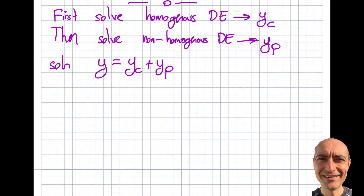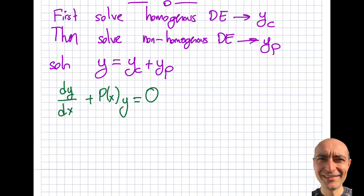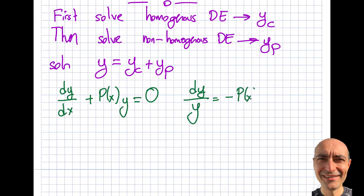If I rewrite the homogeneous equation, it looks like: dy/dx plus P(x)y equals zero. Now I'd like you to pause the video because you should be able to solve this. This is a separable equation from the previous segment. I have dy/dx, P(x), and y, so let me combine them. dy/y will be equal to minus P(x) dx.